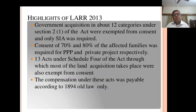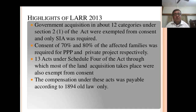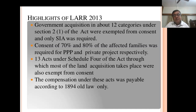Government acquisition in about 12 categories under Section 2(1) of the Act were exempt from consent and only Social Impact Assessment was required. Consent of 70% and 80% of the affected families was required for public-private partnership and private projects respectively. 13 Acts under Schedule 4 of the Act through which most of the land acquisition takes place were also exempted from consent. The compensation under this Act was payable according to the old 1894 law only.